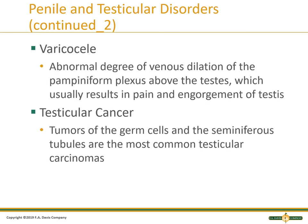A varicocele is an abnormal degree of venous dilatation of the plexus above the testes, resulting in pain and engorgement. Most patients are symptomatic — they notice one side is larger and painful. Obtain an ultrasound and refer out if abnormal.